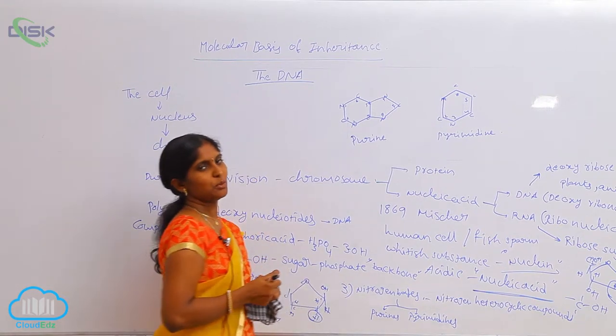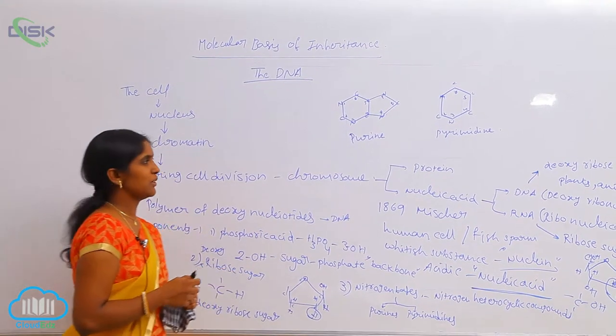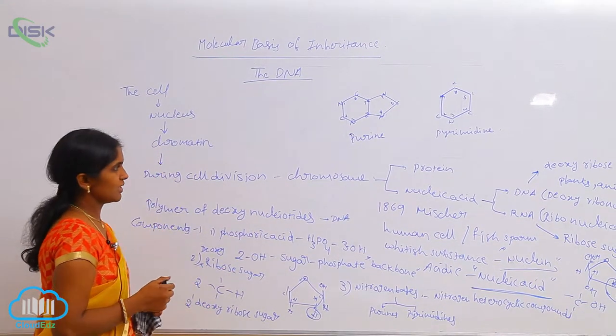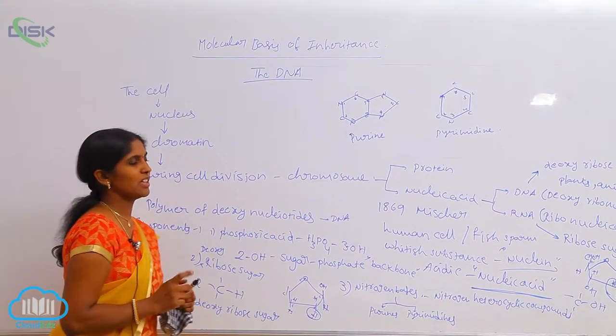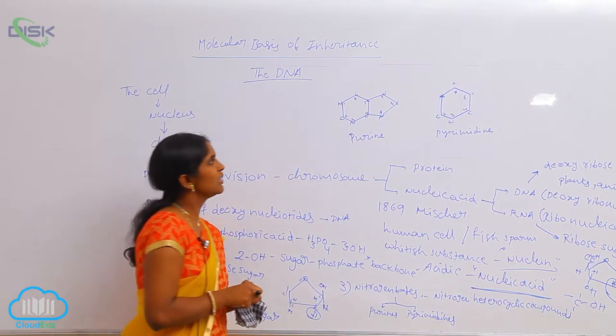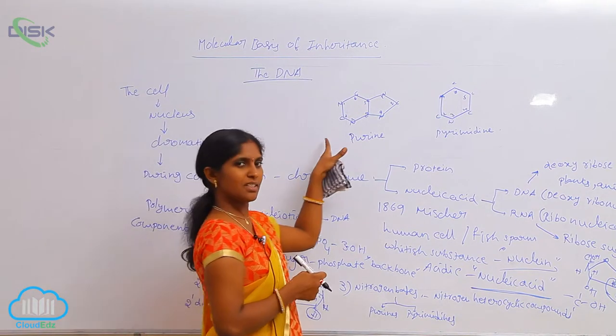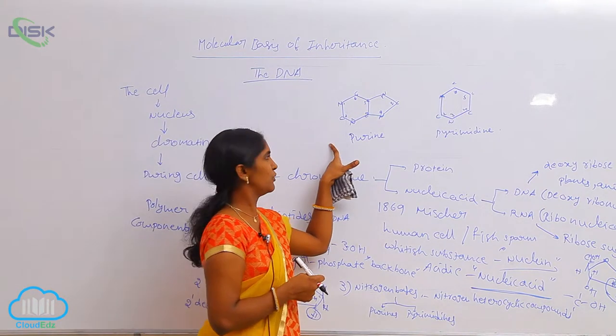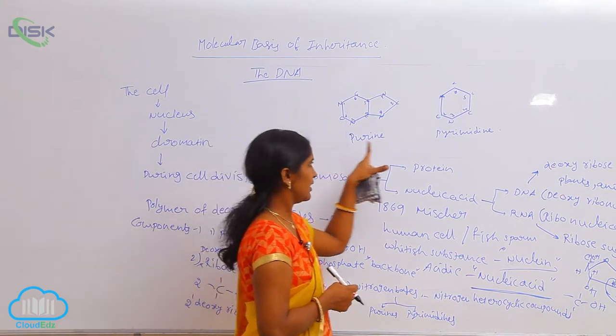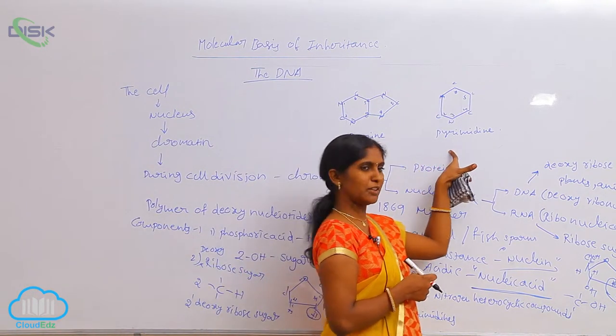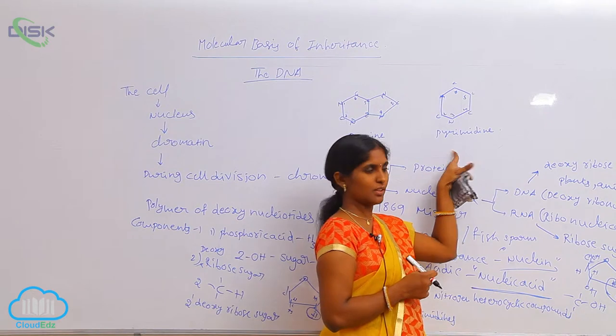Purines and pyrimidines — two types of the nitrogen bases. So, purines and pyrimidines. This is the skeleton of the purine and this is the skeleton of pyrimidines.